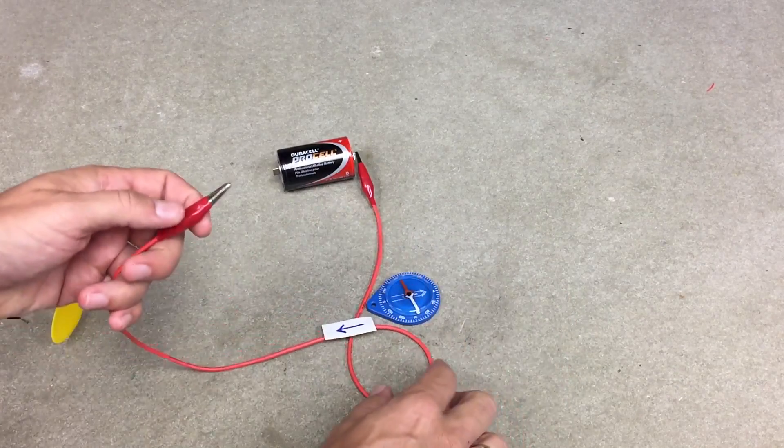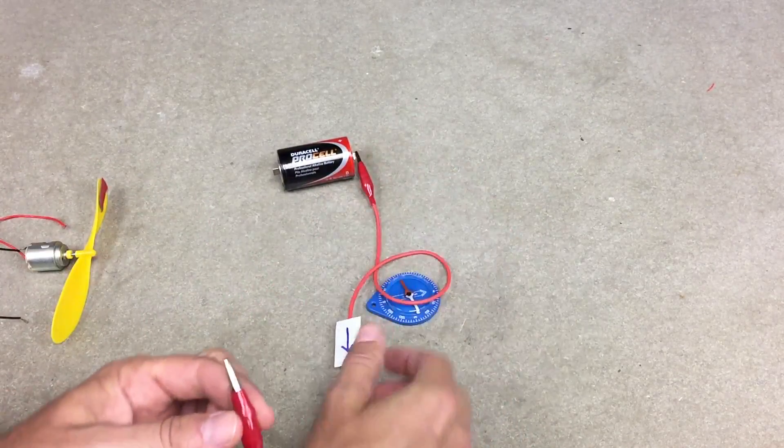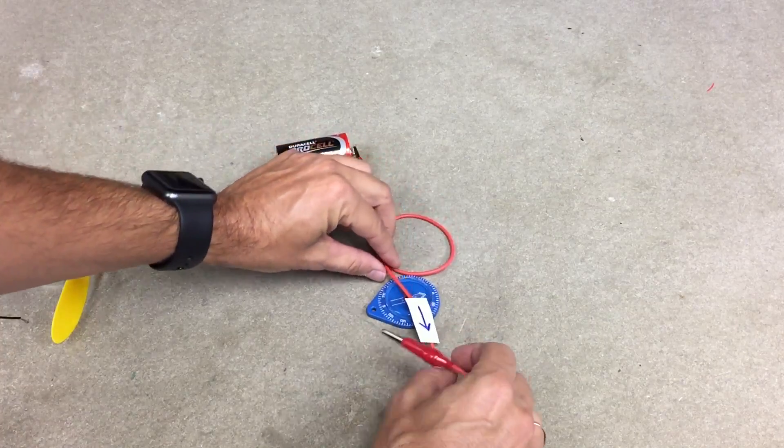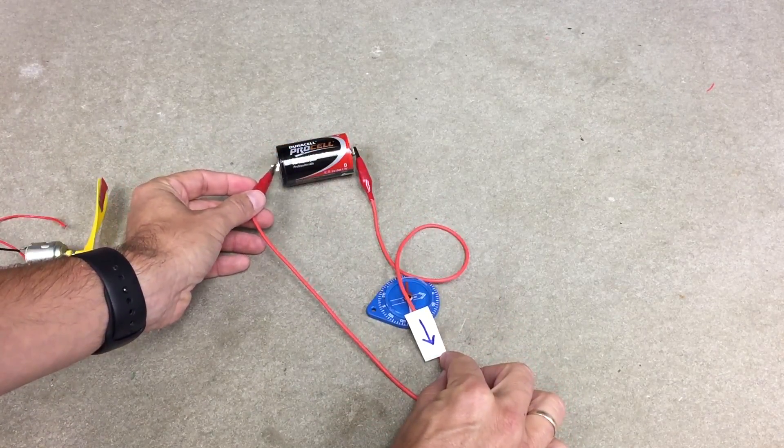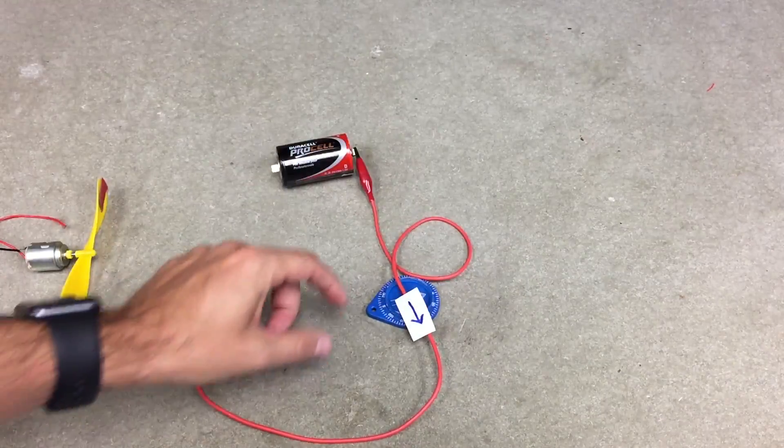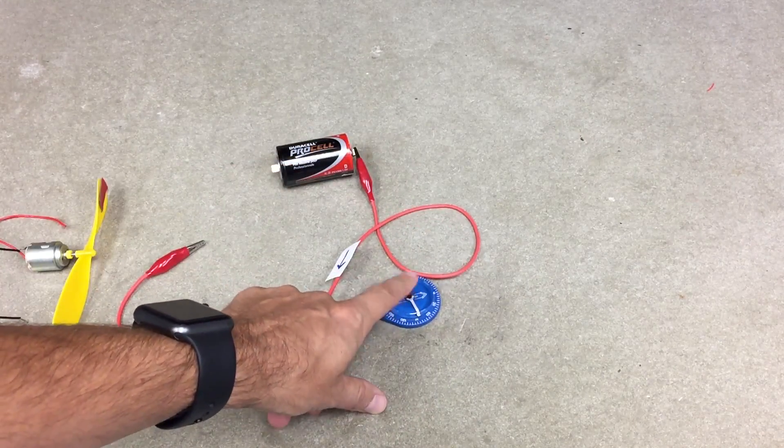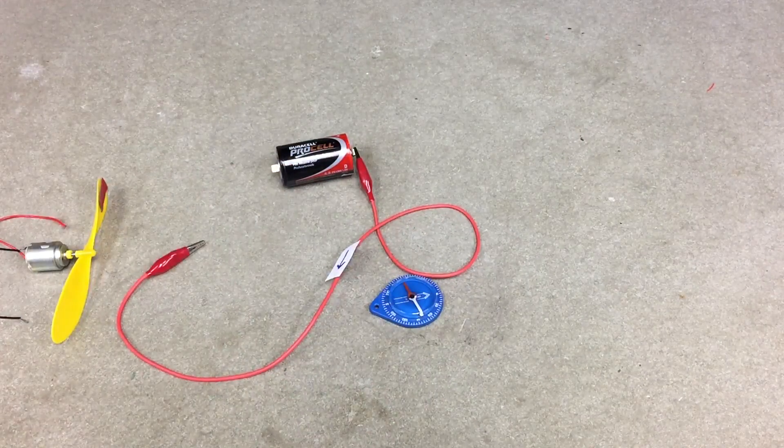Now what happens if I switch it? So now I'm going to have the current going down over the compass, and it goes the other way. So by changing the direction of the current and how it interacts with the compass, it changes what happens.